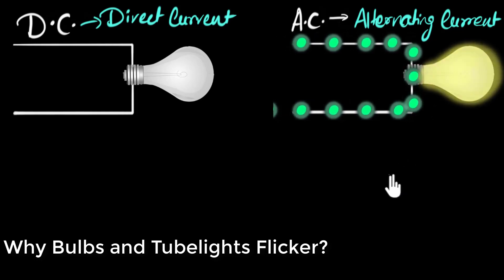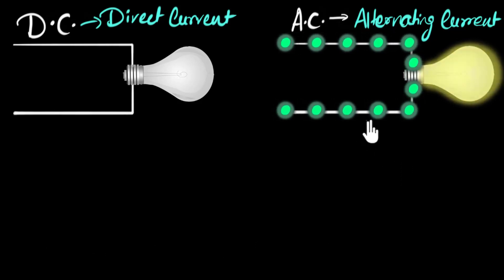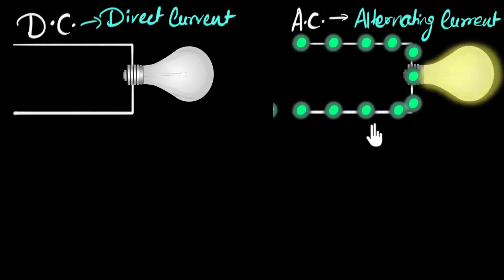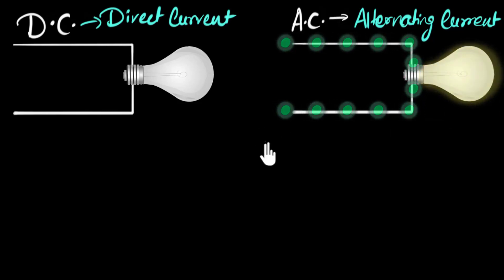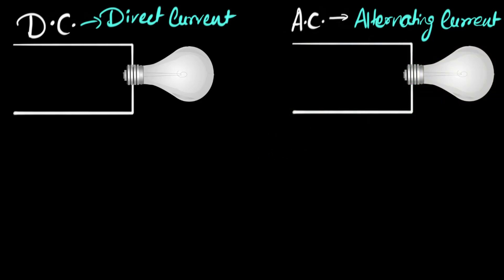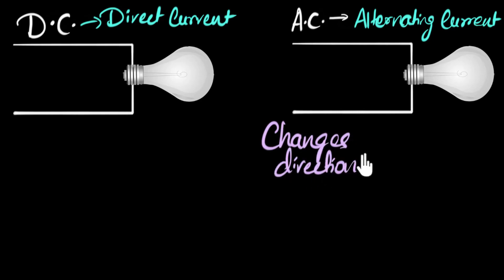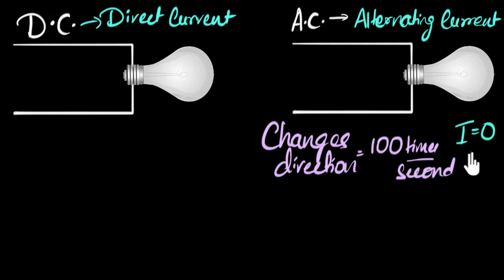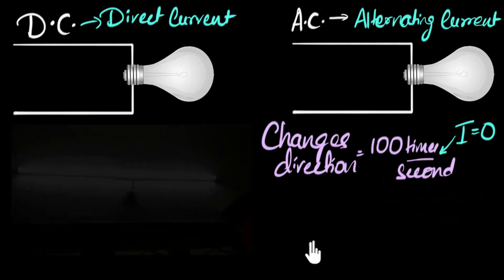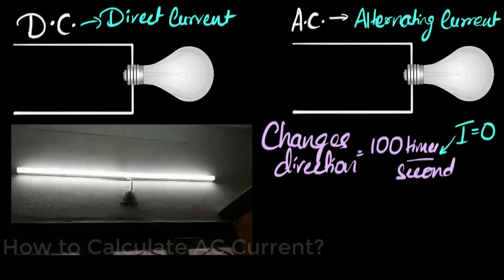And why does it flicker 100 times a second? Well, that's because in India, the current we get from our main supply changes its direction 100 times a second. The current changes direction about 100 times per second. That means the current goes to zero 100 times in one second, and therefore our filament will cool down about 100 times a second. As a result, we see the bulb dimming and coming back up about 100 times a second. Something very similar is happening with the tube light — it's flickering because of the alternating current.